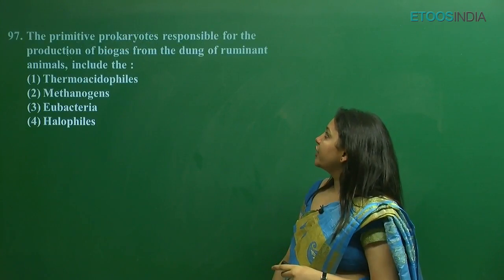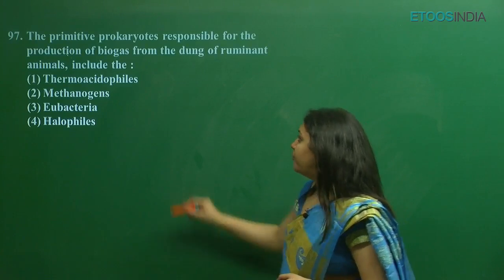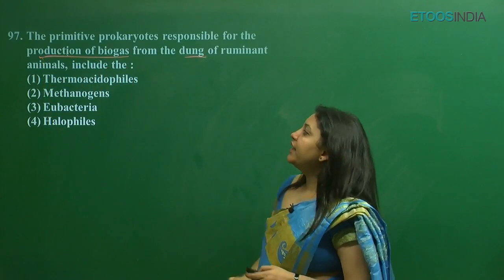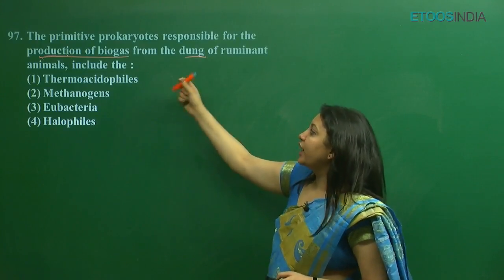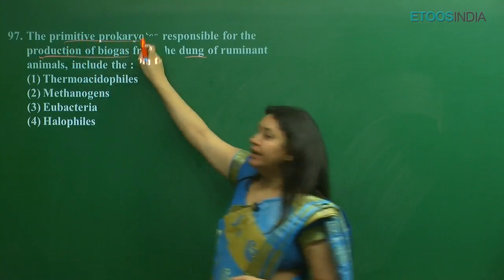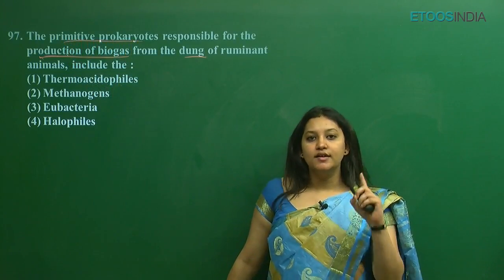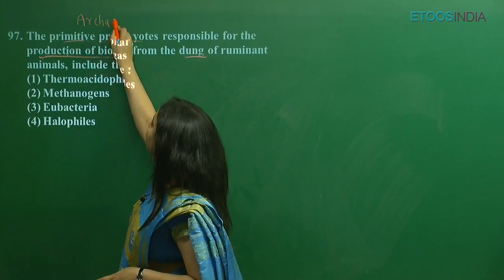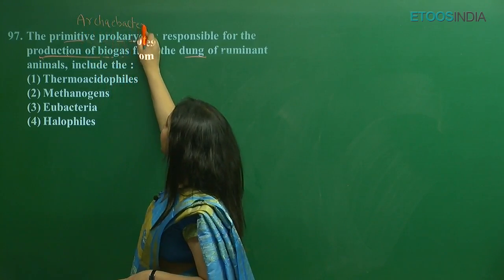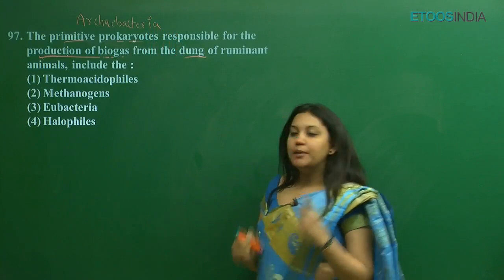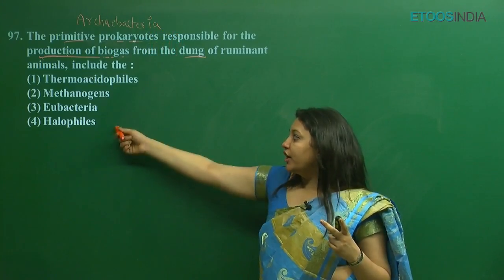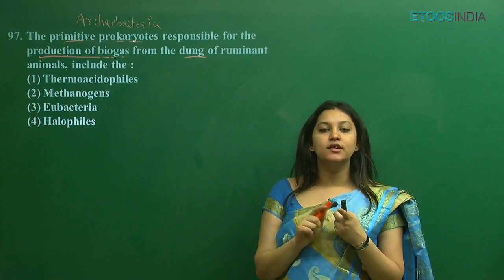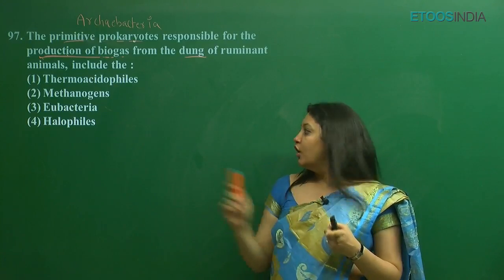The next question is: the primitive prokaryote responsible for the production of biogas from the dung of ruminant animals — the answer points to archaebacteria. They are known as the most primitive organisms. The most primitive prokaryote is archaebacteria. Under archaebacteria, three groups were studied: methanogens, thermoacidophiles, and halophiles.